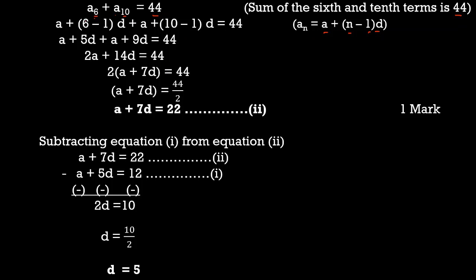So (a + 5d) + (a + 9d) = 44, giving 2a + 14d = 44. Taking 2 as common: 2(a + 7d) = 44, so a + 7d = 22. This is the second equation. You get one mark for the second equation.